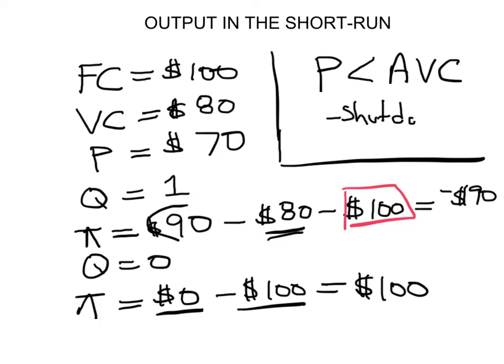So in the short run, this is the shutdown rule we're going to use. Your shutdown price, or your shutdown rule, is a price that falls below your average variable cost. Now in the next little video, we're going to see how this looks in the diagram, and then we're going to see how to find that point when you're given an equation for cost.